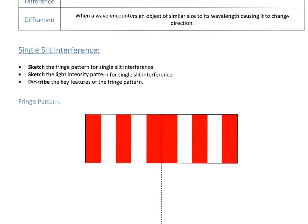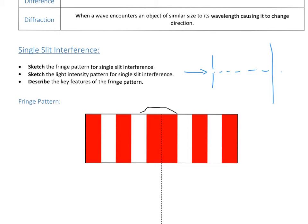Let's have a look at single slit interference. In the apparatus, you have a source of light passing through a single slit, which causes it to diffract, and you get an interference pattern when it interferes with itself. If we put a screen here, the fringe pattern below is what we would see. The central fringe is actually double the width of all the other fringes produced.